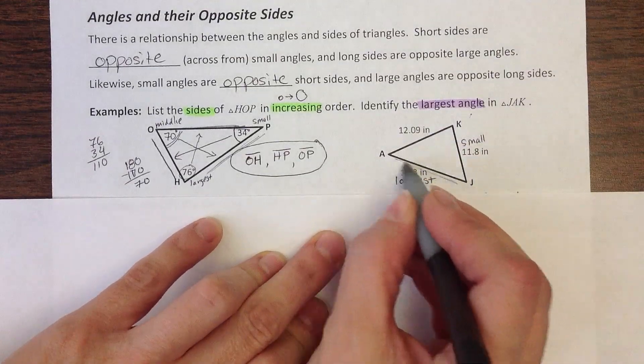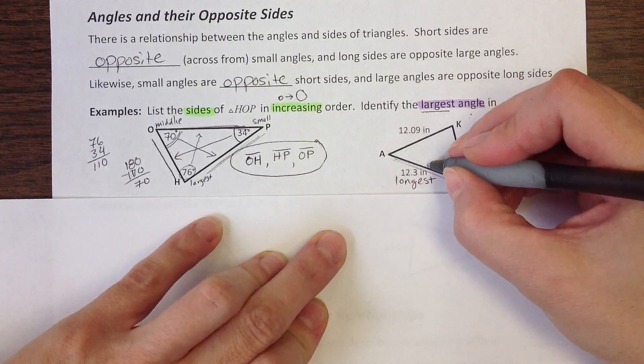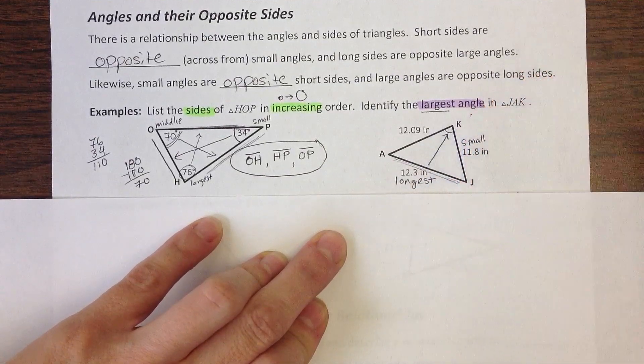So if AJ is my longest side, my largest angle will be opposite that. So go across from there, and I find angle K.